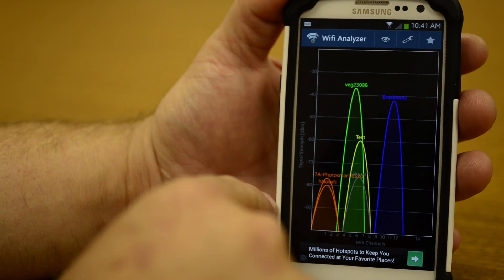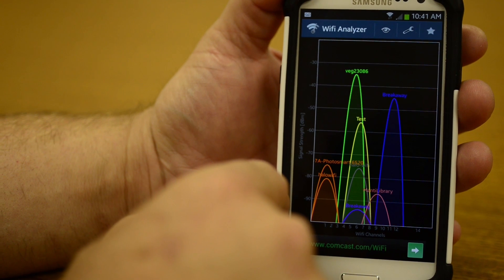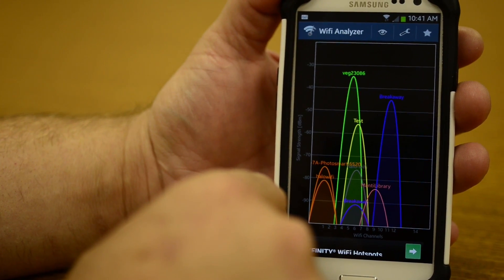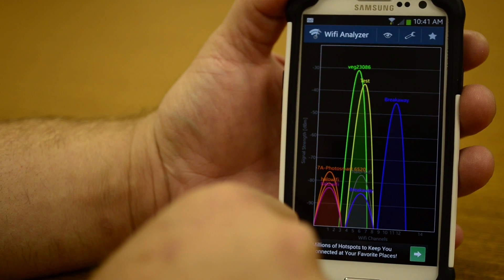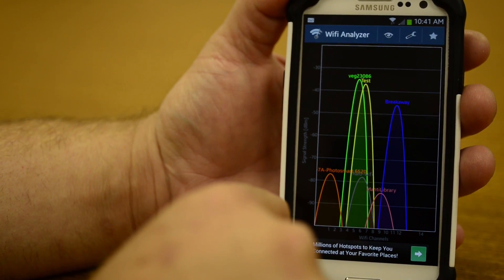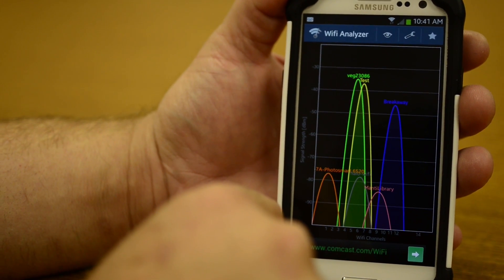So just make sure that you check this and see if you're on a different channel. If you're not, you can move it to another channel which will help with some of the interference and make it so you have less wireless problems when you're trying to get on the internet.